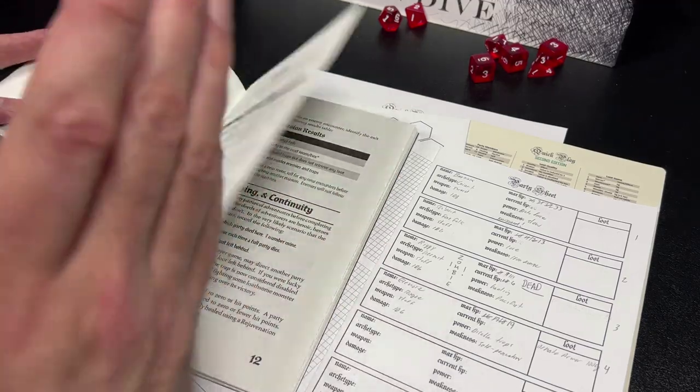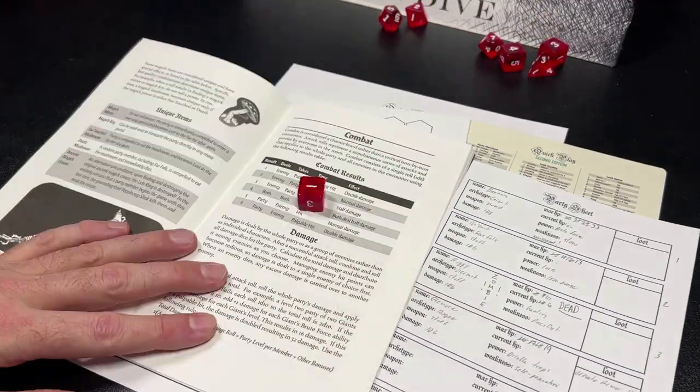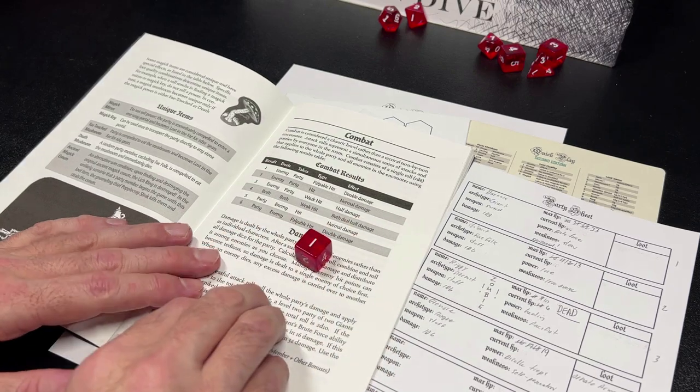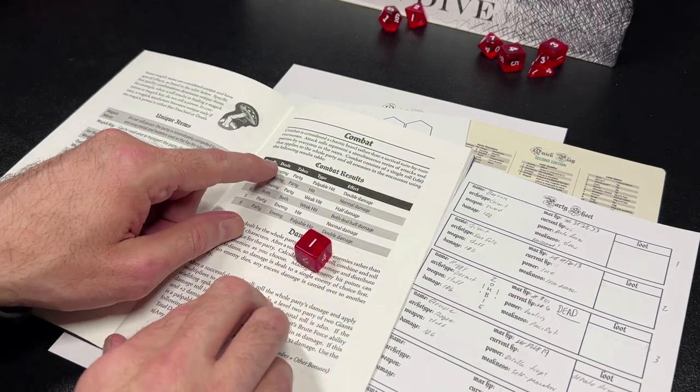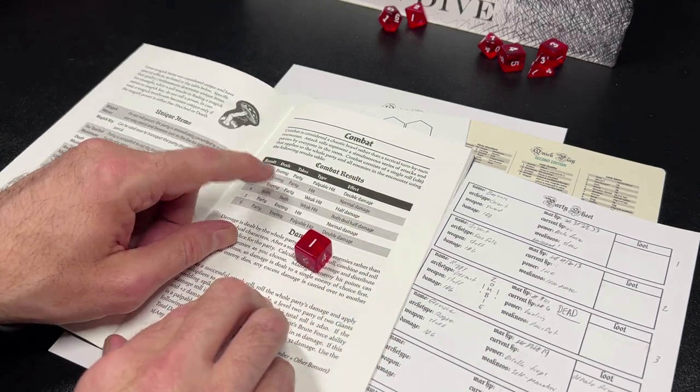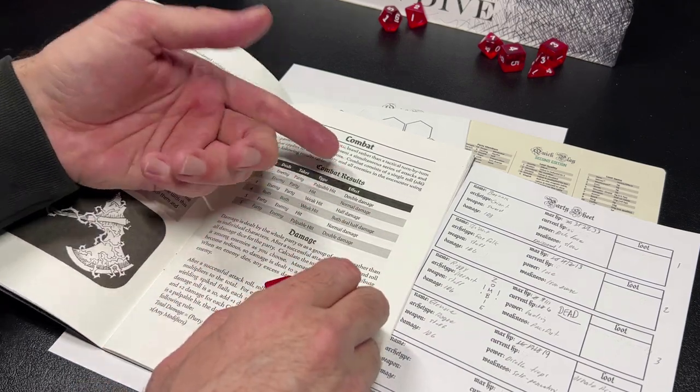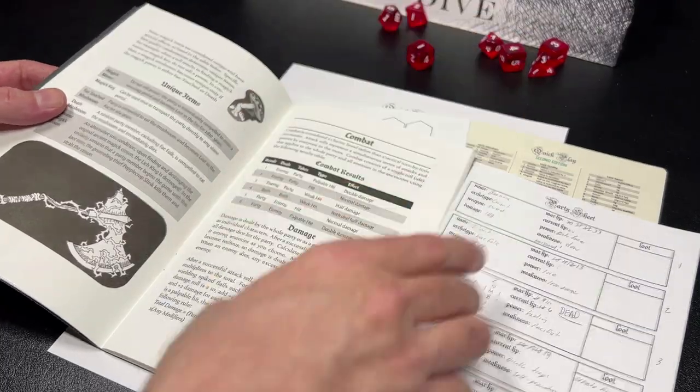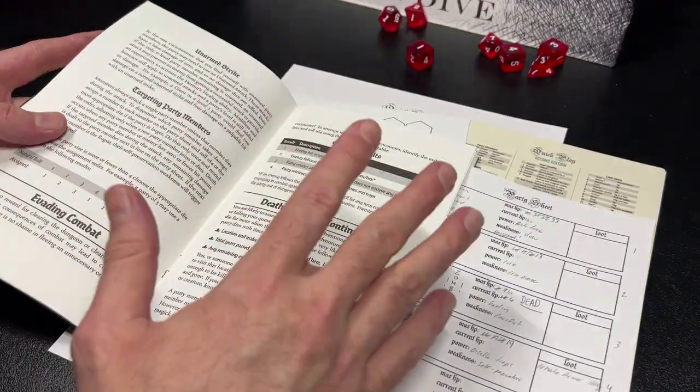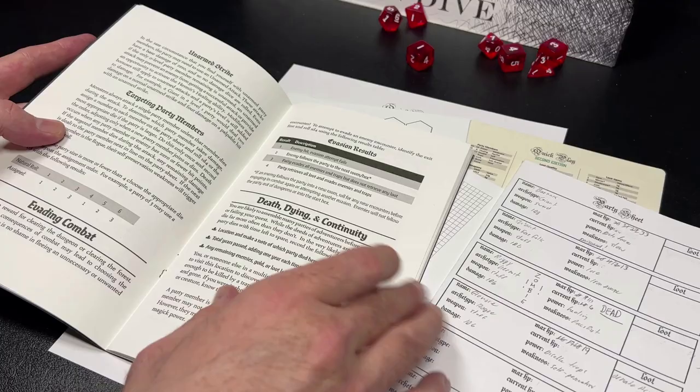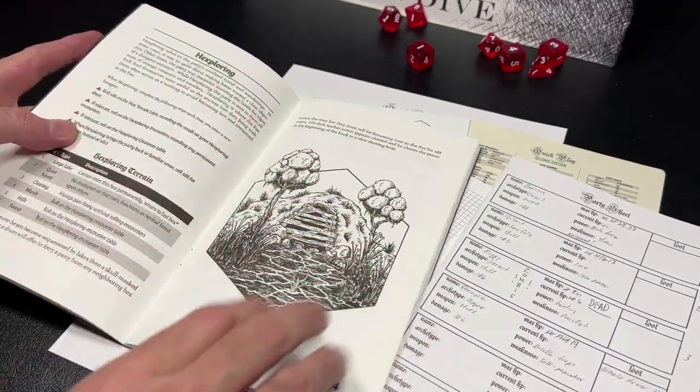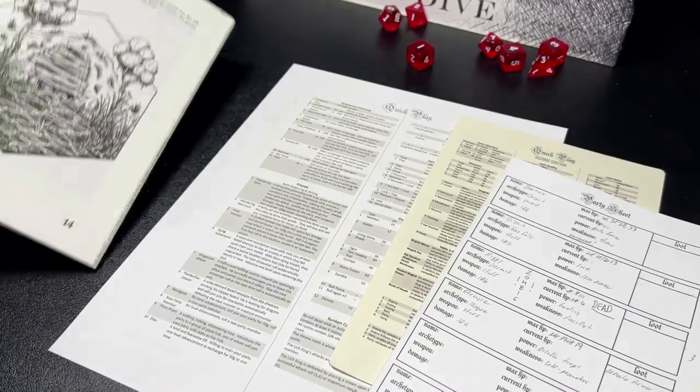Once you have rolled up your characters, you get to the rules about combat. Combat is very simple in the game. There is a d6 chart. You simply roll one d6 and that determines if the enemy hits the party, if both hit each other, or if the party hits the enemy and the kind of damage that they do to their opponents. Combat is very simple and I do enjoy that.